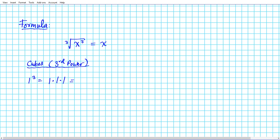So in this case, 1 times 1 times 1 is simply 1. Now, what is 2 cubed or 2 to the third power? 2 to the third power is 2 times 2 times 2. 2 times 2 is 4, and 4 times 2 is 8.